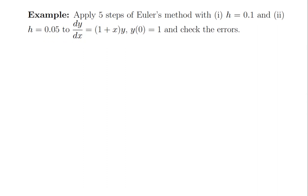Here's a sample problem: apply five steps of Euler's method, first with step size 0.1 and then again with step size 0.05, to this differential equation with the given initial condition, and check the errors. To check the error you need the exact solution. In this case the equation is linear and separable, so we can solve it — the exact solution is y(x) = e^x + (1/2)x². Normally you don't have access to the exact solution; that's the whole reason for doing a numerical solution. This is just for illustration purposes.